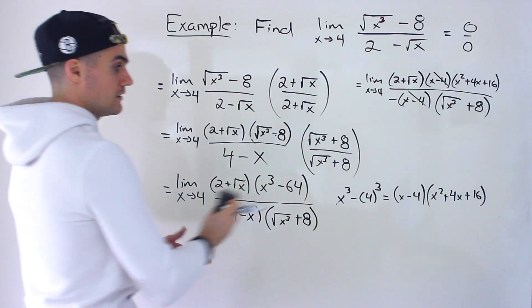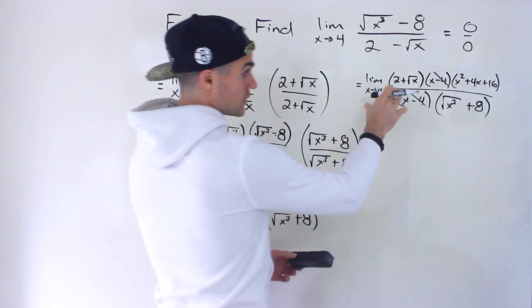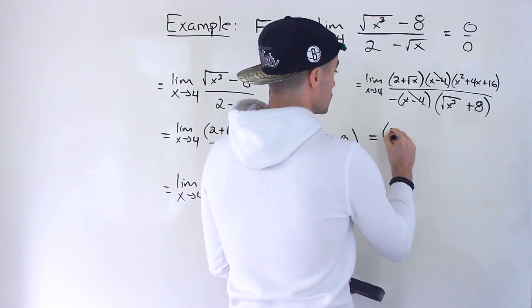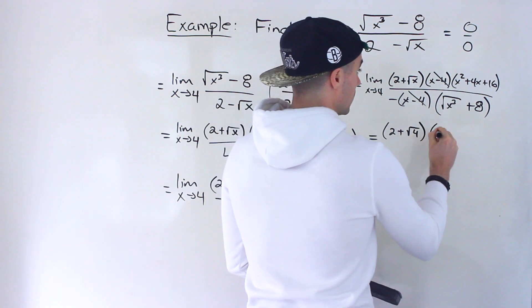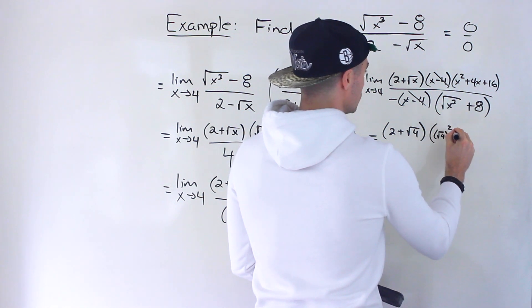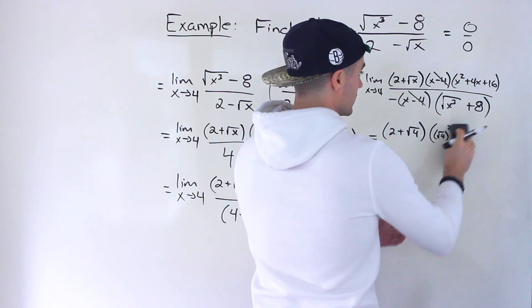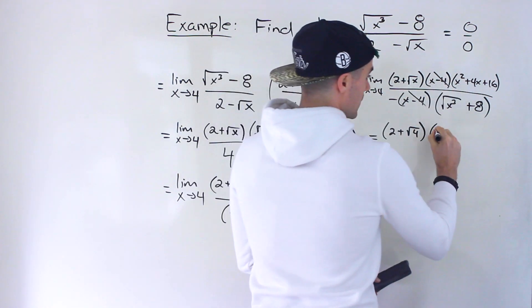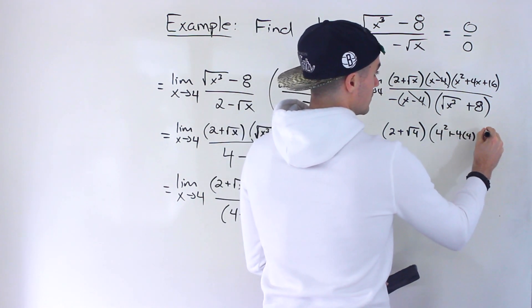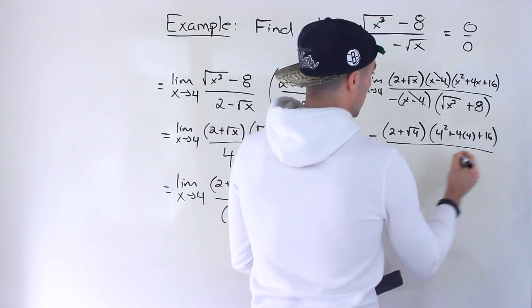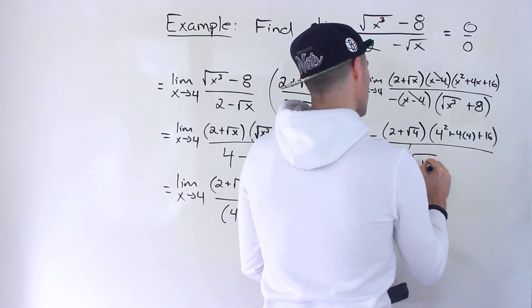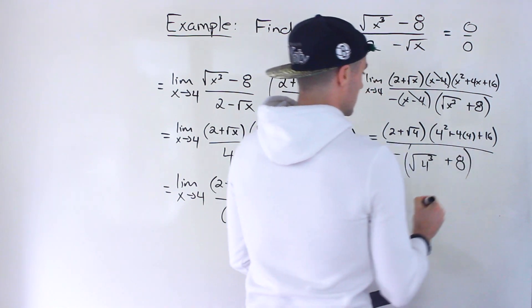Those x minus 4 factors cancel, and now we can do a direct substitution — we won't have a denominator of 0 anymore. Substituting x equals 4: the numerator becomes (2 plus root 4), times (4 squared plus 4 times 4 plus 16). The denominator has the negative sign and the square root of 4 to the power of 3 plus 8.